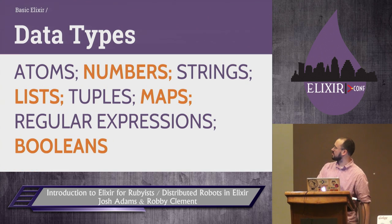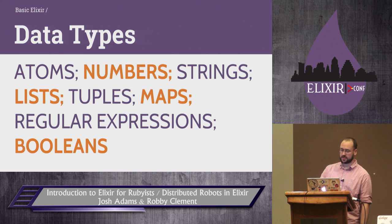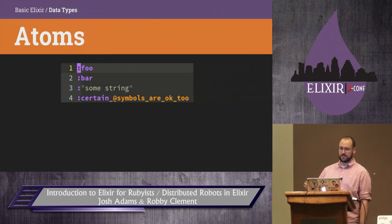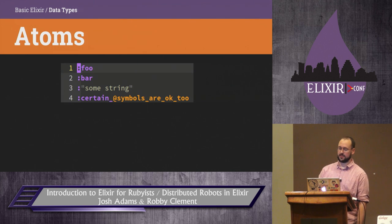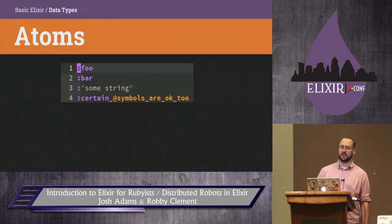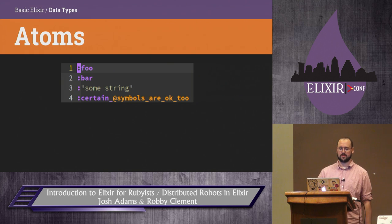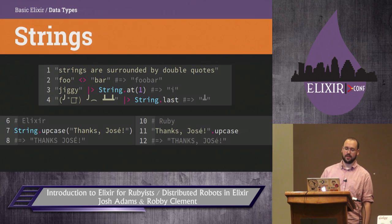Core data types: atoms, numbers, strings, lists, tuples, maps, regex, booleans. Atoms are just like symbols in Ruby — they're a colon followed by letters, digits, and underscores. You might use them to tag tuples. It's very common to see just an atom at the front of a tuple, and that explains what type of data this is.